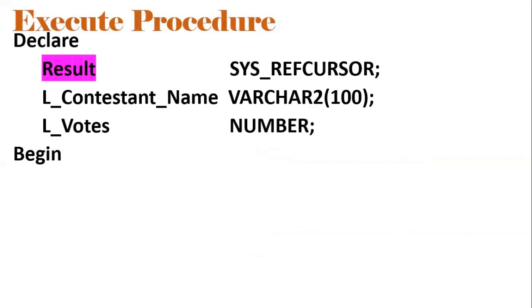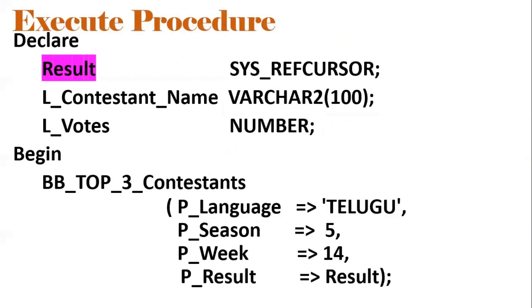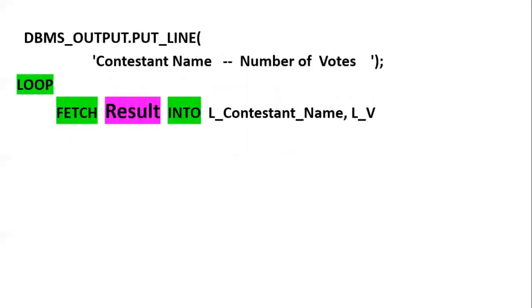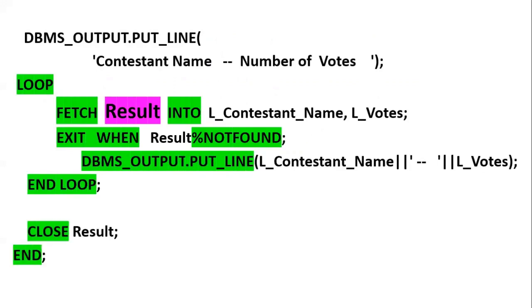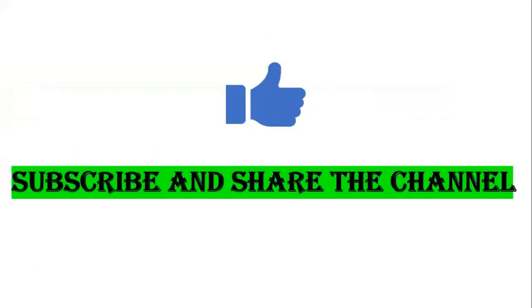Using an anonymous block to see the result: local variables L_contestant and L_votes are declared, then BB_top_three_contestants is called with P_language Telugu, season 5, week 14, and P_result as the SysRef cursor. A loop fetches records — since there may be multiple records — and DBMS_OUTPUT.PUT_LINE displays the results. Then END LOOP and close the cursor. The output displays the top three contestants. If you like the content, please subscribe and share the channel. Thank you for watching.